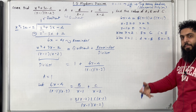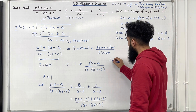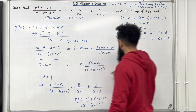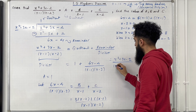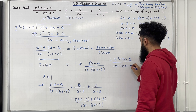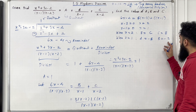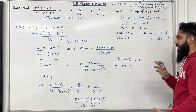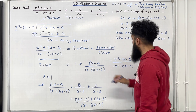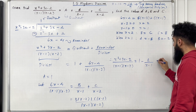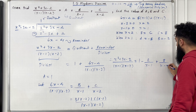So I've got my a, I've got my b, I've got my c. Therefore the given fraction can be written as a, which is 1, plus b over x minus 1 — b is minus 2, so that becomes minus 2 over x minus 1 — plus c over x minus 2, which is 8 over x minus 2.